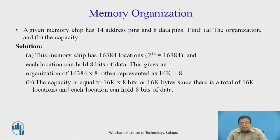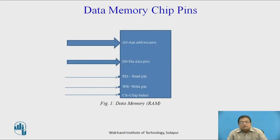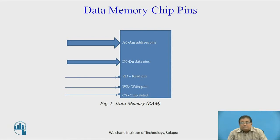The pins provided for the data RAM are: address pins A0 to AM, where M depends upon the number of locations; data pins D0 to DN, where N depends upon the number of bits per location — if each location stores 8 bits, then N equals 8 and there are 8 data pins. There is also a read control signal required for read operations, meaning data comes out from memory and is taken by the processor.